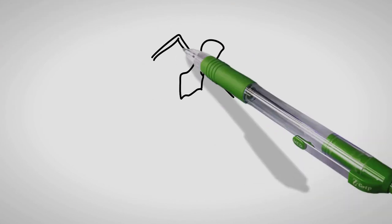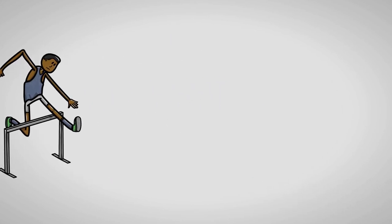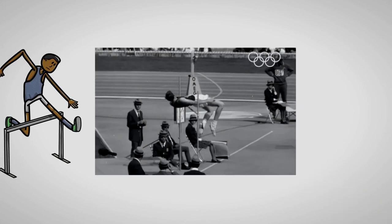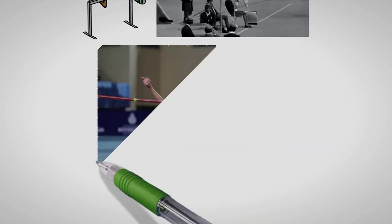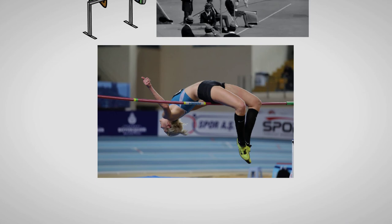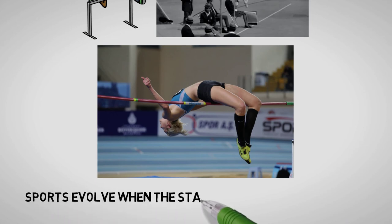Most elite high jumpers used diverse jumping techniques to clear the bar until Dick Fosbury won a gold medal in the 1968 Summer Olympics. Ever since Dick Fosbury won the gold medal, it is now normal to use the Fosbury flop. Sports evolve when the standard is being challenged. The same counts for life.